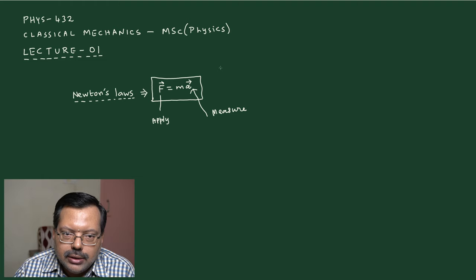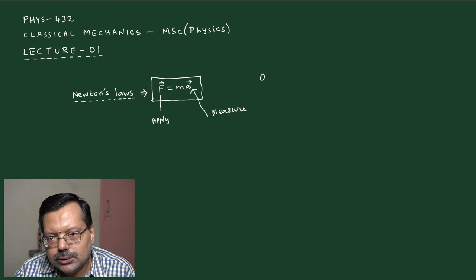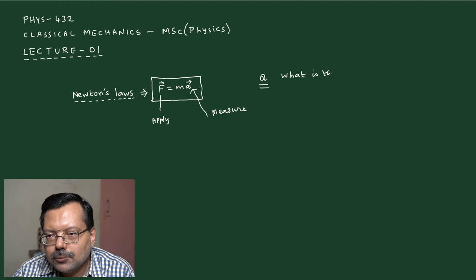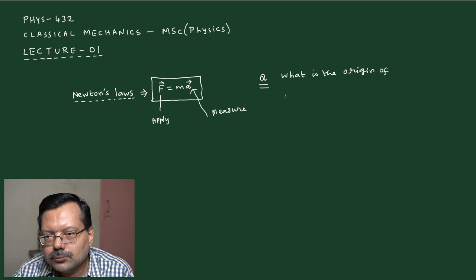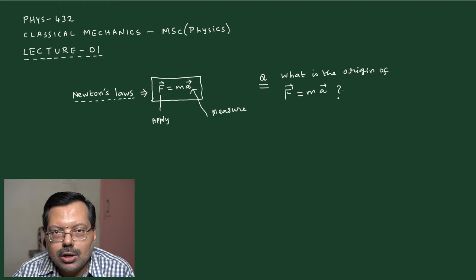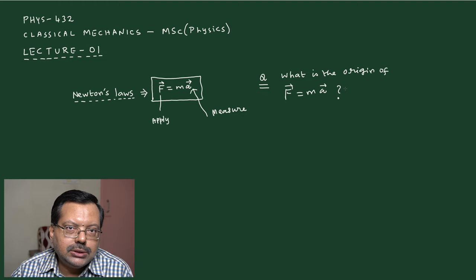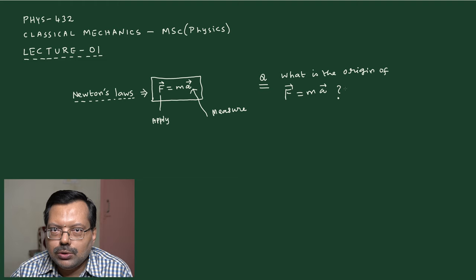Now we are asking a different, more fundamental question: where does this equation actually come from? What is its origin? Newton wrote it down based on experiments, but suppose we do not have any experiment — why should such an equation exist at all? Why should nature obey an equation of the form F = ma?